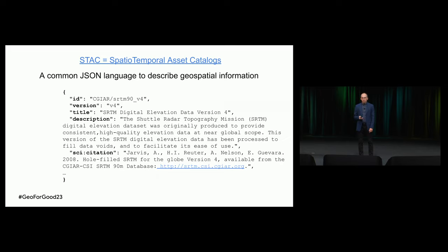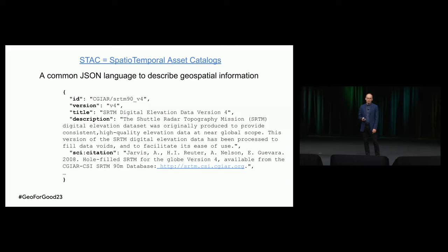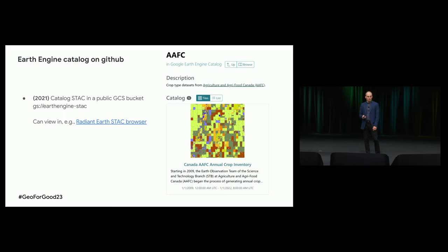The way this is implemented is we have JSON files in a format called STAC. STAC is not a Google format — it's a more or less industry-standard format which stands for Spatio-Temporal Asset Catalogs. That's how we encode all the fields that show up on the catalog pages. Some fields in red are standard; some fields like citation are extensions. We are allowed to make up our own extensions, which we use because we need a lot of fields.